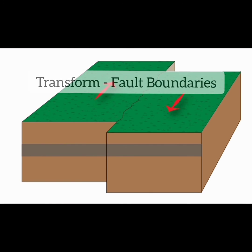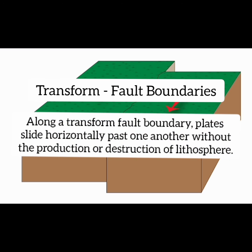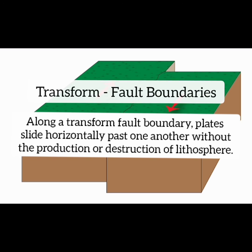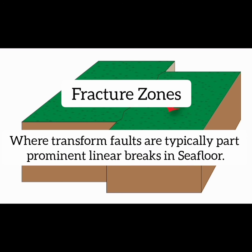Along a transform fault boundary, plates slide horizontally past one another without the production or destruction of lithosphere. Fracture zones, where transform faults are typically found, are prominent linear breaks in the seafloor.